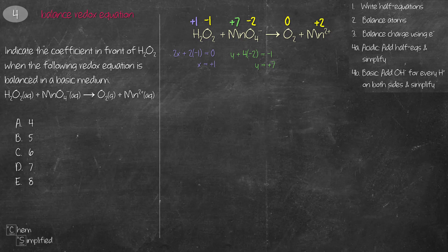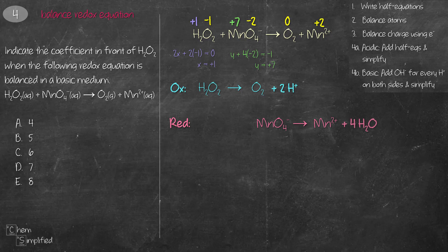Now that we know all the oxidation numbers we can write the half equations. The oxidation reaction involves increasing oxidation number (for oxygen), and the reduction equation involves decreasing oxidation number (for manganese). For the oxidation equation, to balance H on the right we add 2H+. For the reduction equation, we first add 4H2O to balance O, then add 8H+ to balance H on the left.